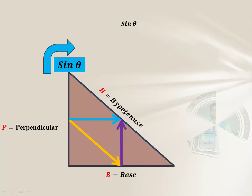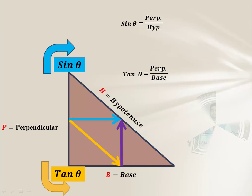Then we have to find tangent theta. Tangent theta starts with, you can see that the starting point is perpendicular and the ending point is base. So tangent theta equals perpendicular over base. Got it?